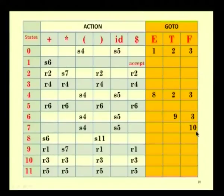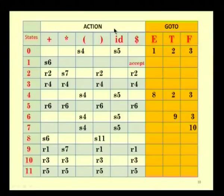We now have the complete parsing table. The action entries for various terminals and goto entries for variables are filled, and the remaining unfilled entries are treated as errors. After constructing the parsing table, we can parse any string in the language of the given grammar.